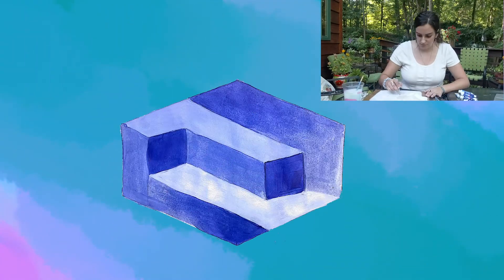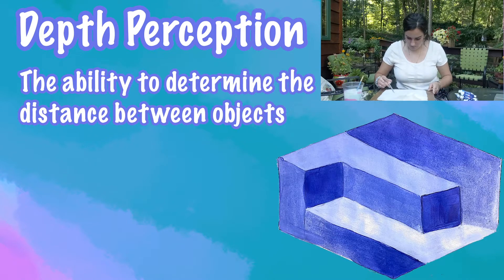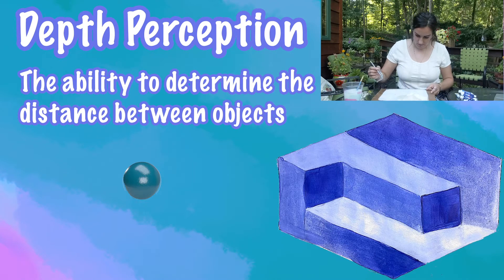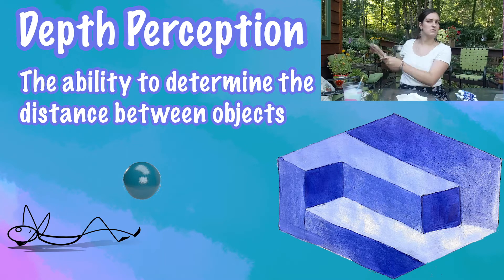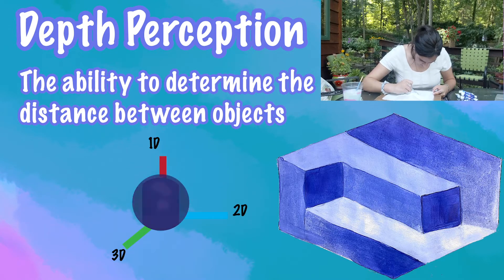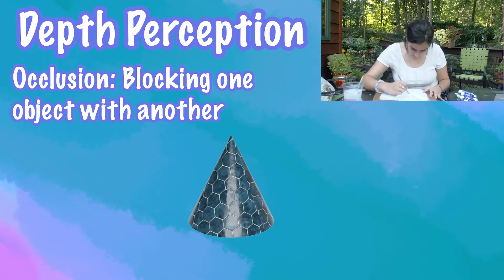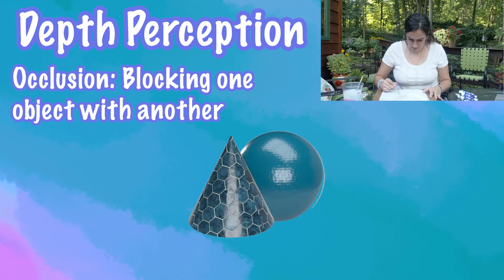First, we have to start off with a rough sketch, so I'm just going to sketch the lines real quick. A really cool thing about this painting that Genevieve made is that it really emphasizes depth perception. Now depth perception is our ability to tell or judge the relative distance of objects in relation to you as well as in relation to other objects. In other words, it's the ability to see in three dimensions.